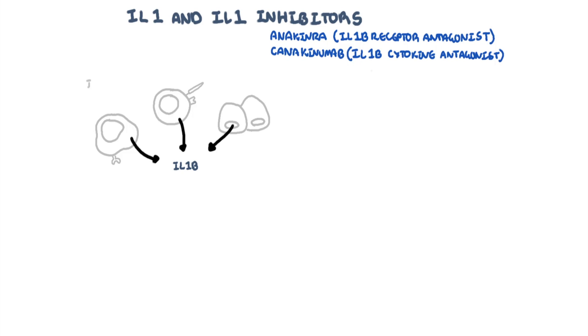Interleukin-1b is a potent pro-inflammatory cytokine produced by the immune cells, notably the innate immune system, as well as epithelial cells during a stimulus such as inflammation or infection.